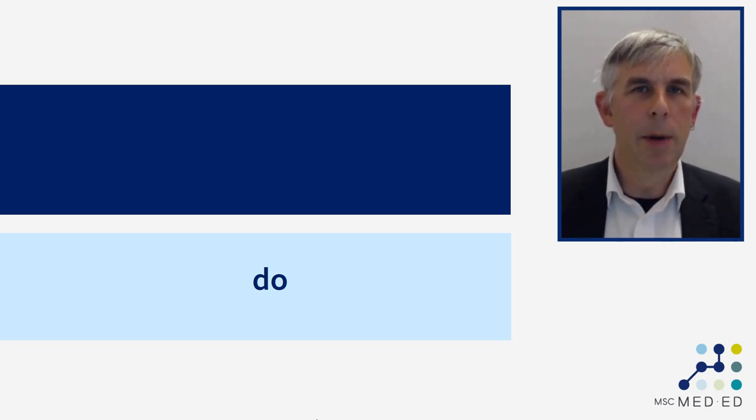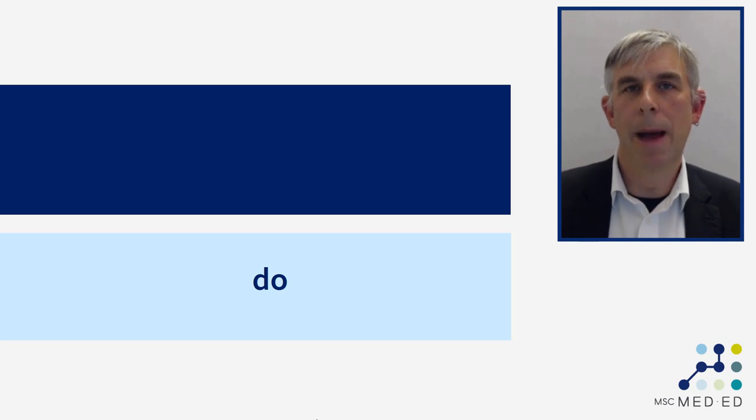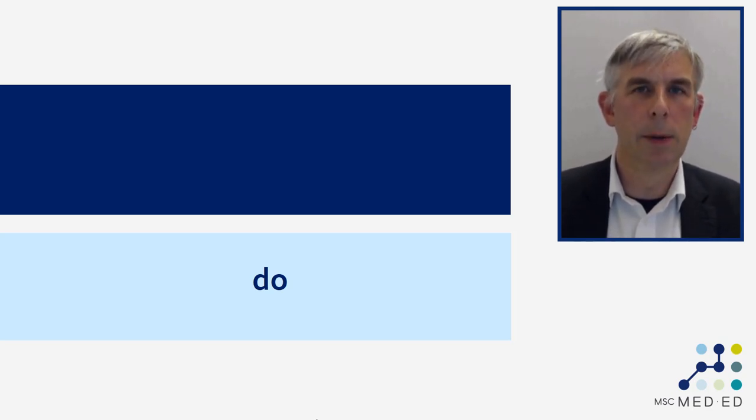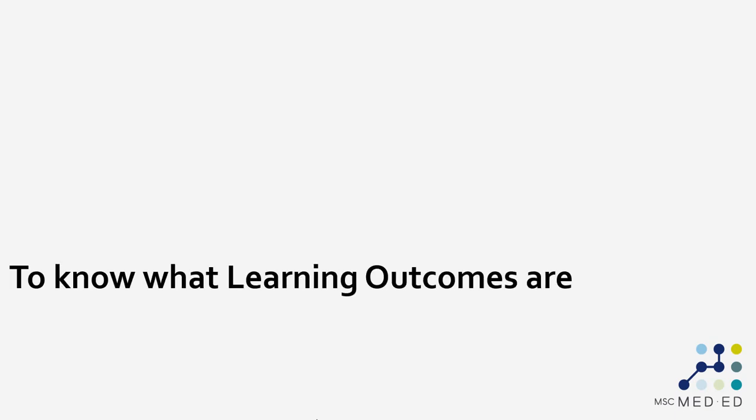Let me give you an example of how this translates into good and bad learning outcomes, using this video as an example. What I want you to be able to do is to know what learning outcomes are, to be able to understand learning outcomes. The problem is it's very difficult for me to know what it is that you know. That action verb 'know' is very difficult to observe, and that makes this a bad learning outcome.